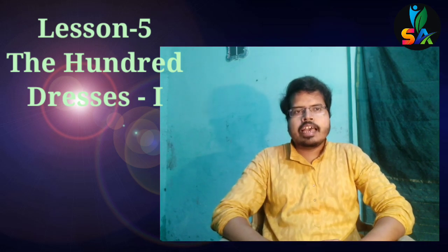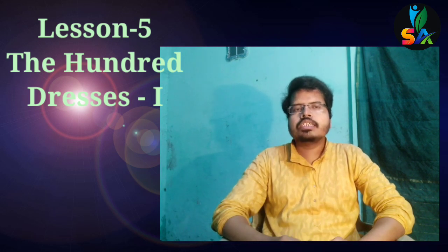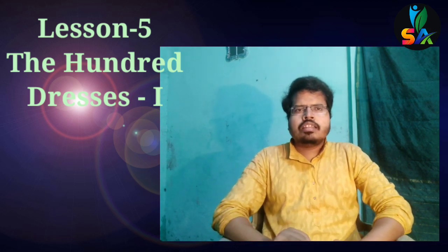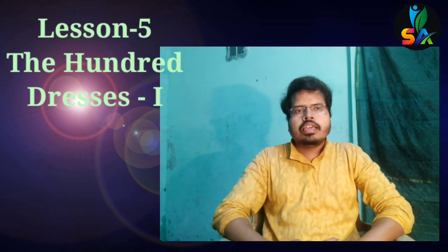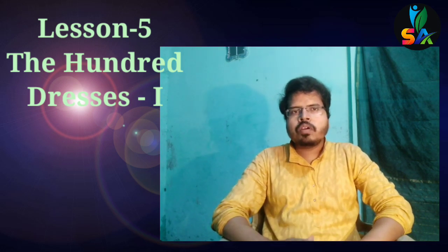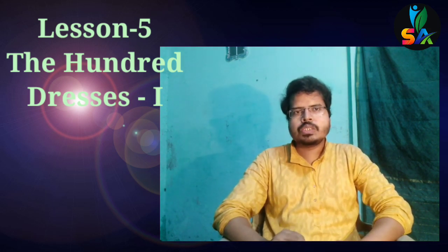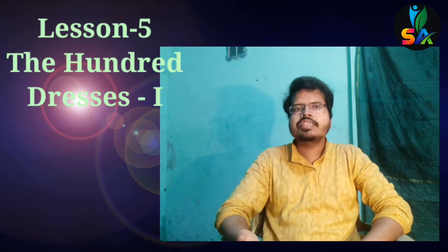Outside the classroom, students asked her how many types of dresses she had, what the colors were, and what the designs were. She also said she had sixty pairs of shoes. But other students did not believe her because they saw her come to school every day in blue faded dresses. This raised the question: was she telling a lie, or were there other reasons why she claimed to have a hundred dresses?